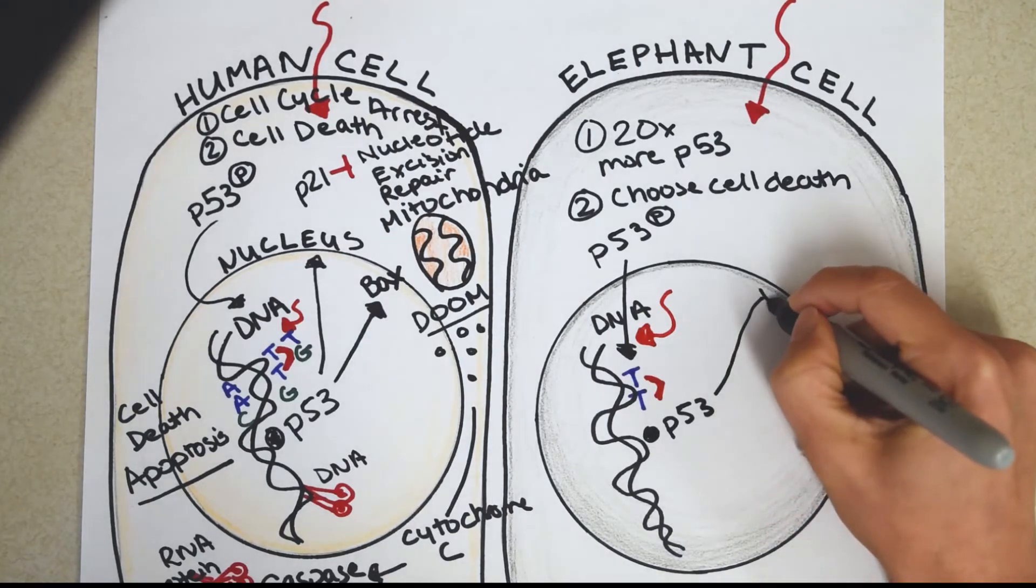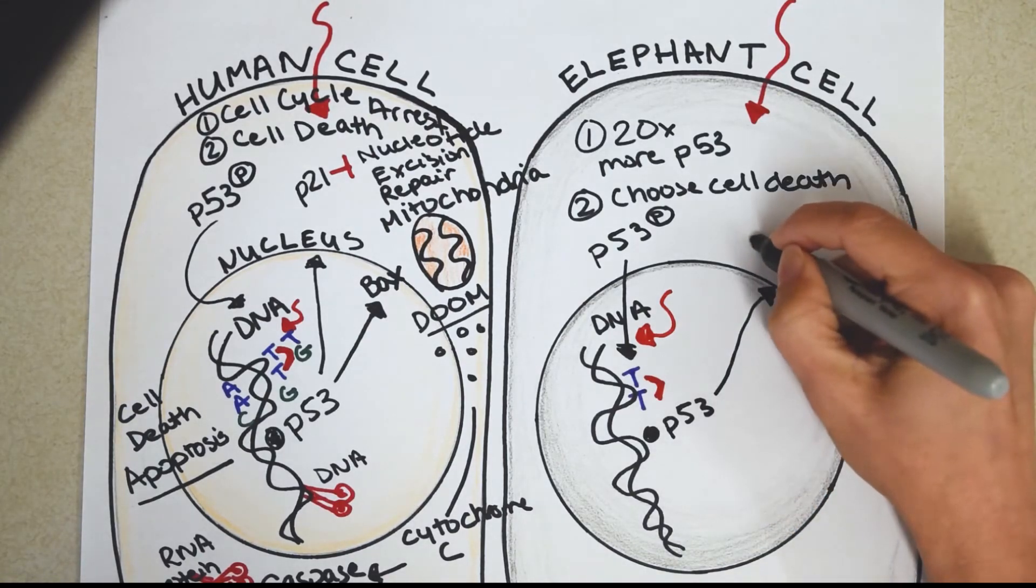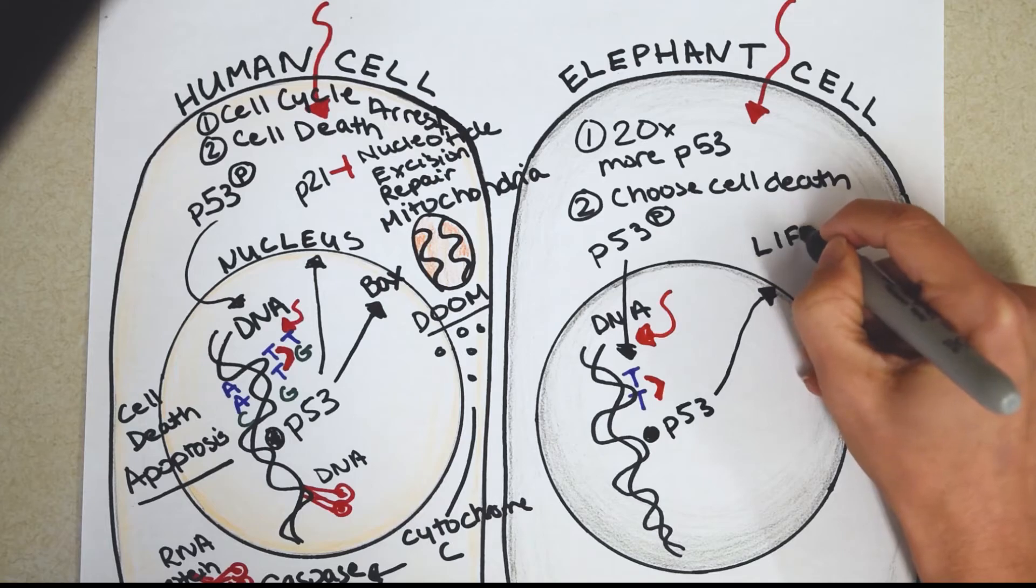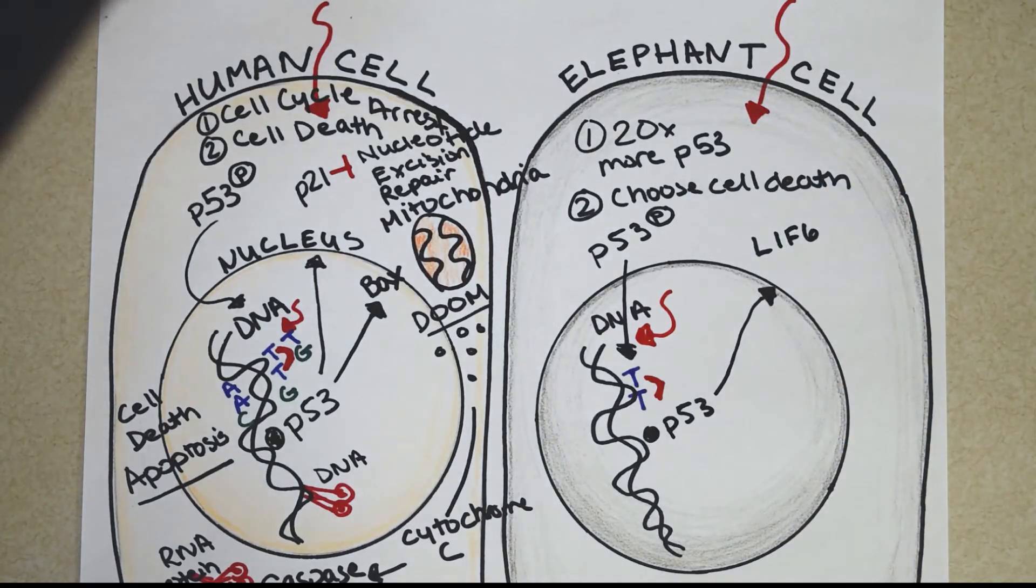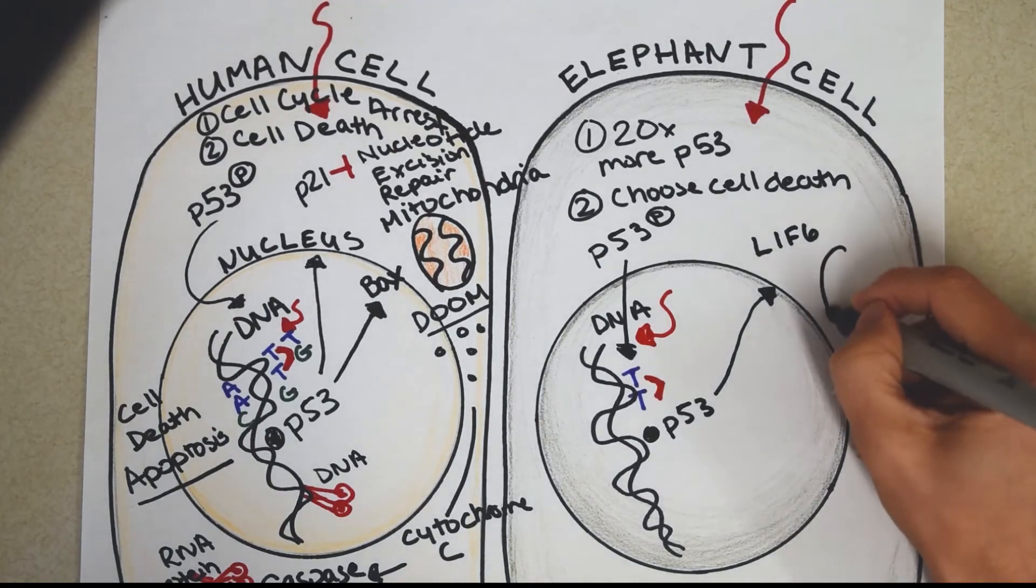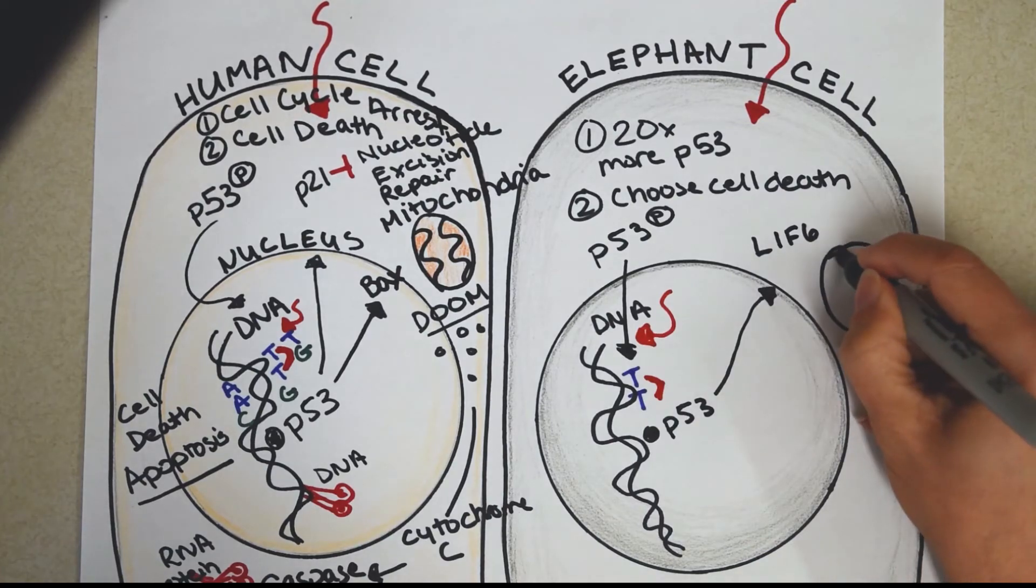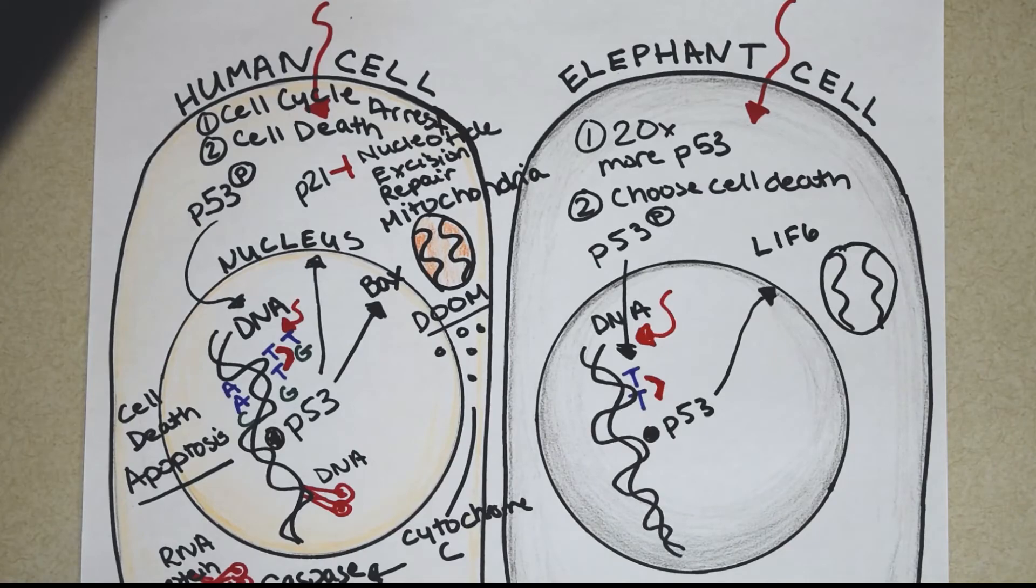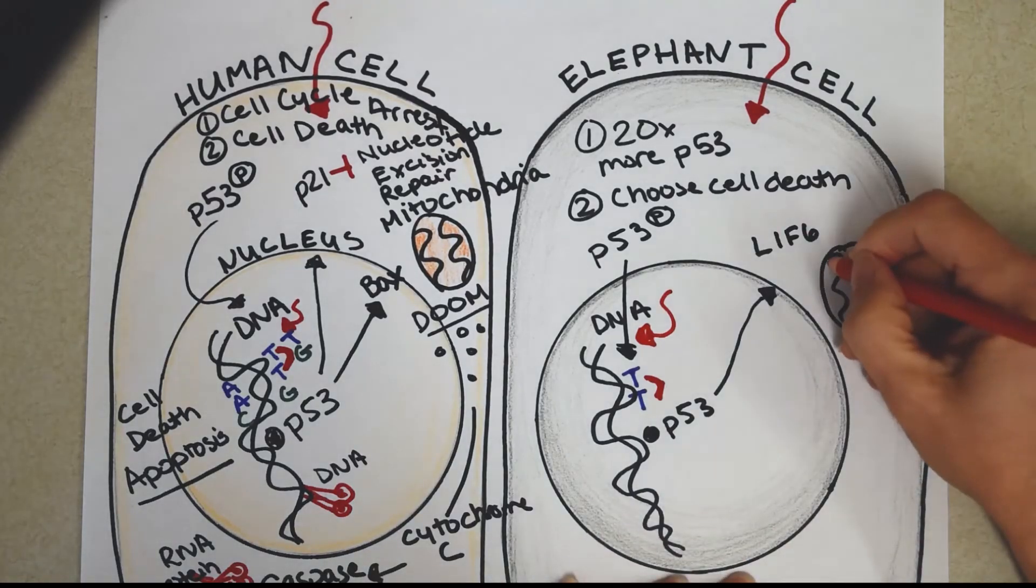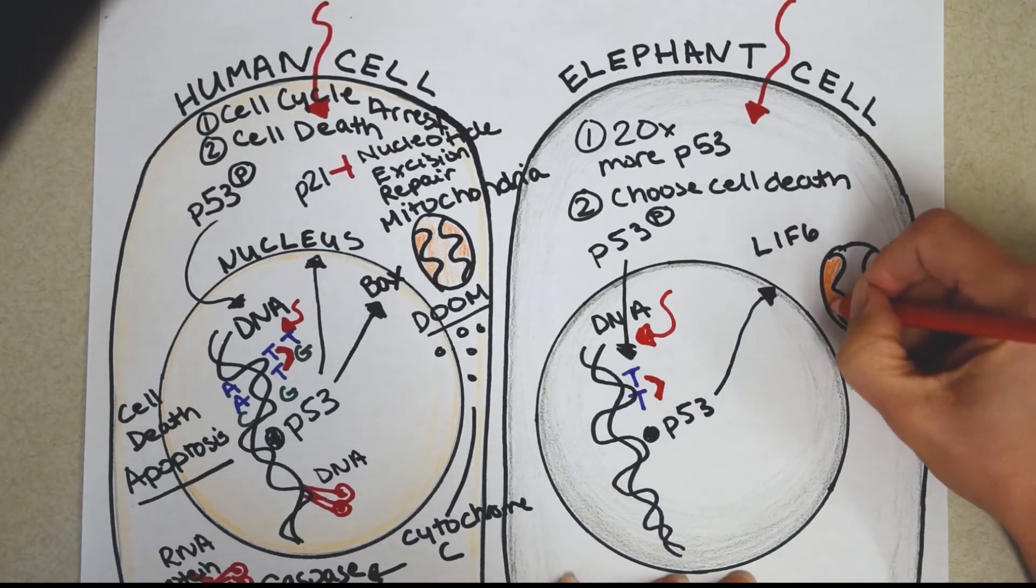Now it's not Bax, exactly. They have their own. It's called LIF6, L-I-F-6. And it's got a great name, Leukemia Inhibiting Factor. So you won't forget that this is how they stop tumors. But it's also going to find the mitochondria. So there's a lot of similarities here. It's going to find the mitochondria, just like Bax did. And then it's going to punch holes in it, just like Bax did.